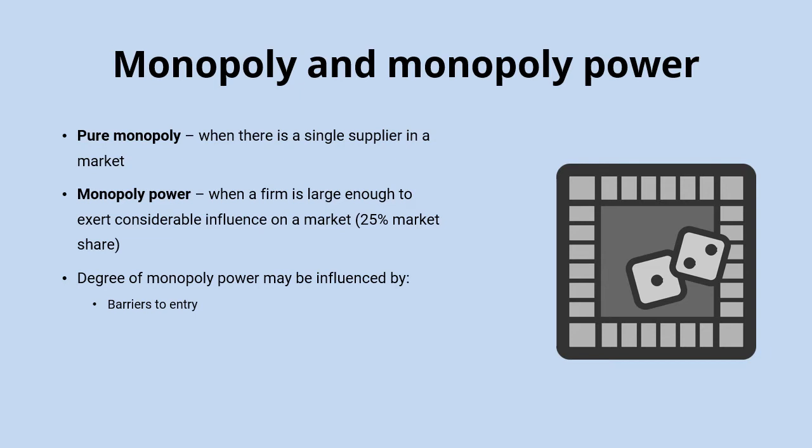Economies of scale can also be quite significant barriers to entry, because large firms benefit from those economies of scale by producing much larger amounts of output. New entrants to the market, by definition, will be producing at a much lower scale and won't be able to benefit from those economies of scale, making it much harder for them to compete. The higher those barriers to entry are, the more difficult it will be for new entrants or smaller firms to challenge the monopoly power of a larger firm.